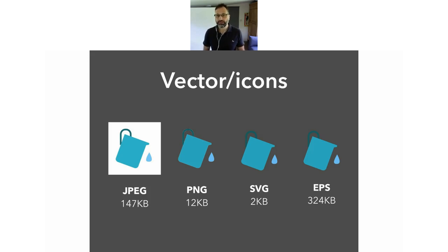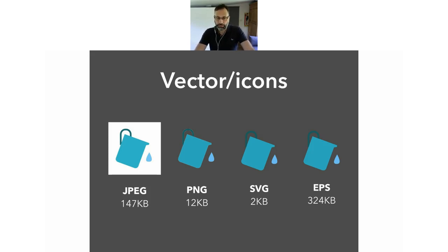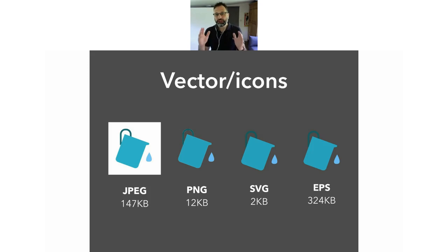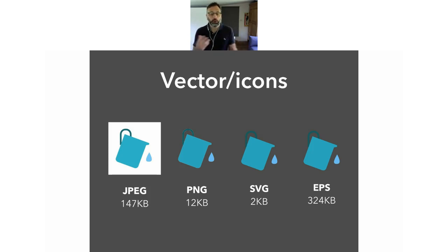If you've got something in a vector format, ideally you want to maintain it in that vector format. One of the reasons is size. Let's go through the formats. So the first on the left is JPEG — a lot of you have probably heard of it. It stands for Joint Photographic Experts Group. It's an image format which allows you to compress the image, meaning reduce the file size.